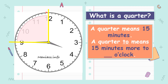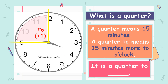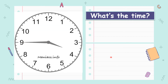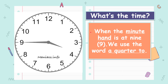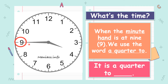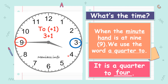So when we see the word a quarter to, we need to add 1 — meaning the next hour. So we will write it as: it is a quarter to the next time. How do you know when to write a quarter to? When the minute hand, the long needle, is at 9, we use the word a quarter to. For example, it is a quarter to. Where do you think it is? Has it reached 4 yet? No, it is still 3. So when you see the word to, you need to add 1. The answer would be 3 plus 1 — it is a quarter to 4.